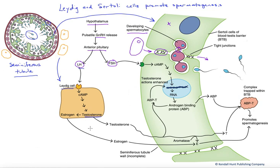Testosterone is absolutely essential to spermatogenesis — low levels of testosterone result in sterility. The Leydig cell also expresses an enzyme known as aromatase, which leads to the production of estrogen. Even though estrogen is known as a female hormone, it is absolutely essential to spermatogenesis as well. Males are testosterone dominant, with higher concentrations found in the bloodstream, but are very dependent upon estrogen as well.